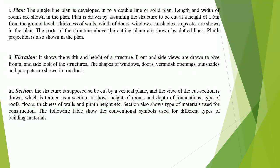Elevation: it shows the width and height of a structure. Front and side views are drawn to give the frontal and side look of the structures. The shapes of windows, doors, veranda openings, sunshades and parapets are shown in true look. Section: the structure is supposed to be cut by a vertical plane and the view of the cut section is drawn, which is termed as a section. It shows the height of rooms and depth of foundations, type of roofs, floors, thickness of walls and plinth height etc.